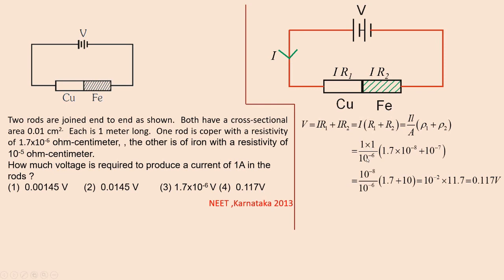10⁻⁸ by 10⁻⁶ here. Then 1.7 + 10. Because 10⁻⁸ has been taken out, 10⁻⁷ only is there. But what is taken out is 10⁻⁸, so 10 will come here. So 1.7 and 10, 10⁻⁸ has been taken out.